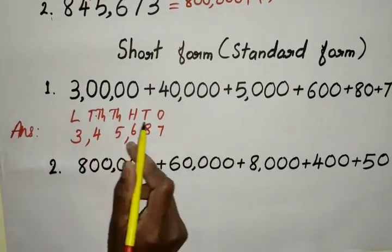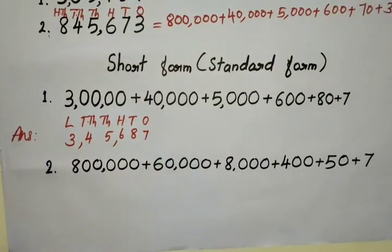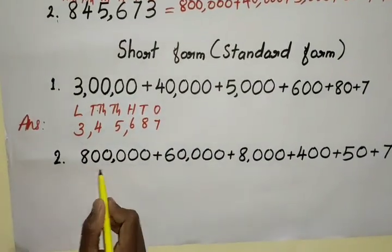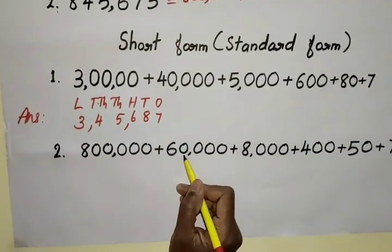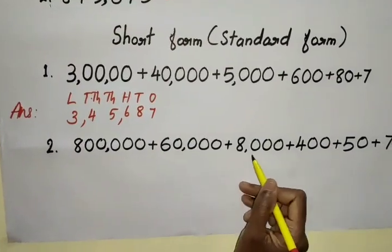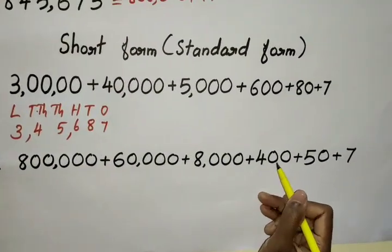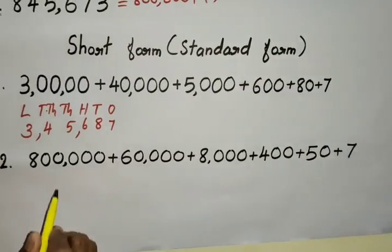This is the standard form. Next: 800,000 plus 60,000 plus 8,000 plus 400 plus 50 plus 7.